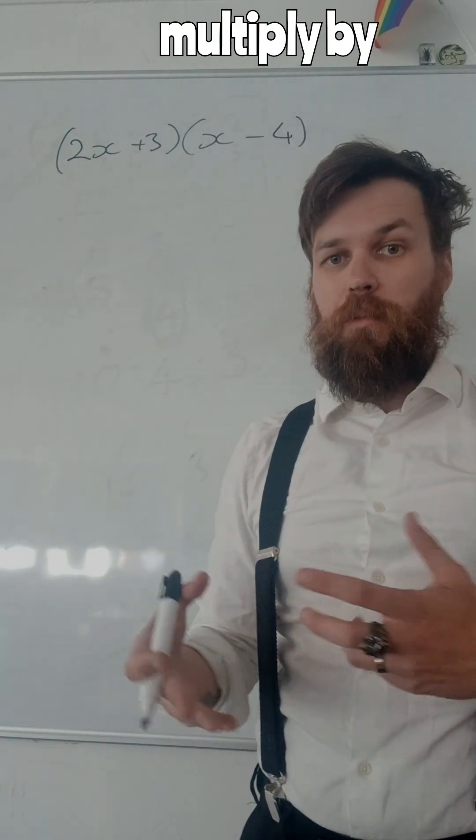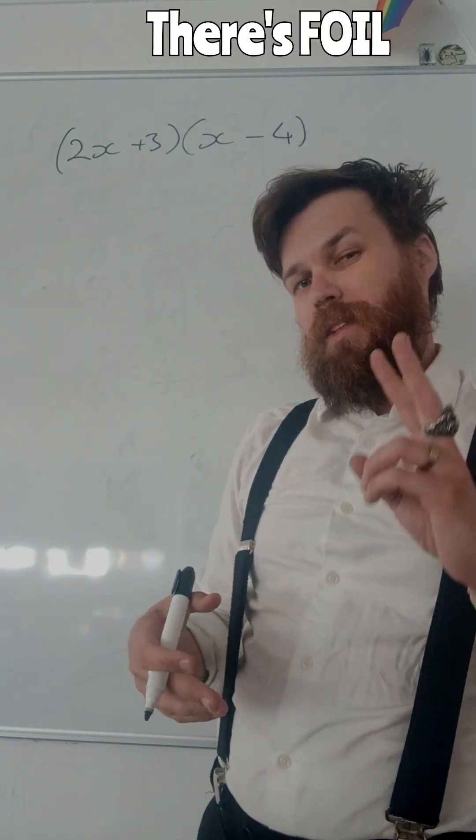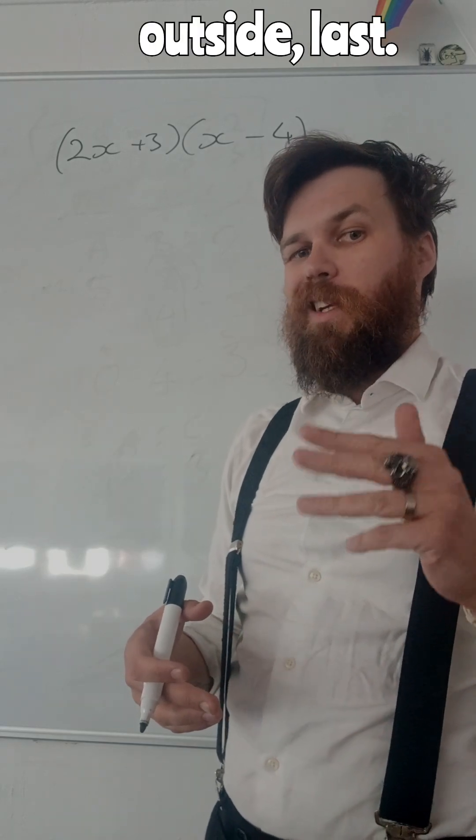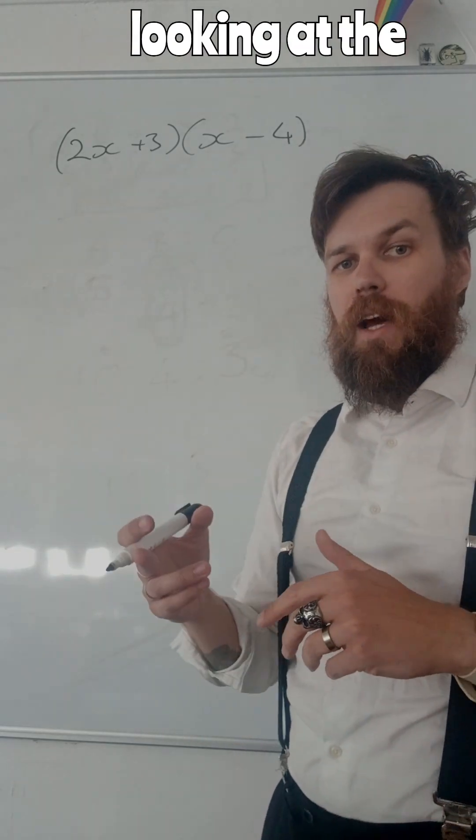There's going to be a lot of things to multiply by each other. There's two methods. There's the FOIL method, first inside outside last, but today I'm going to be looking at the GRID method.